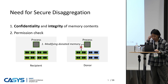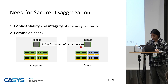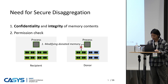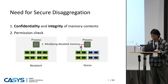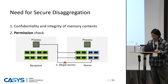Security is also a significant concern in memory disaggregation. First, the confidentiality and integrity of pages stored in donor nodes must be protected, especially when the privileged software of the donor node is compromised. Confidentiality limits illegal accesses to the data, and integrity ensures the data is accurate and not modified. We must prevent the memory contents from being exposed or modified by the donor's host. In addition, when a node donates part of its memory, it must be protected from any illegal attempts to access unauthorized regions.